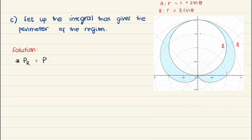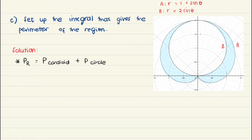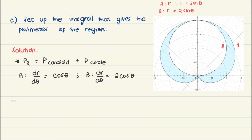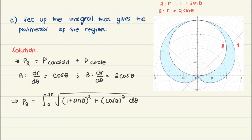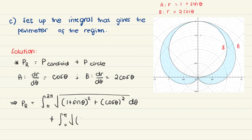For the perimeter, based on how the region is set up, we notice that the boundary consists of the perimeter of the cardioid and the perimeter of the circle, so we add them. Computing the derivatives: dr over d theta of the cardioid is cosine theta, and dr over d theta of the circle is 2 cosine theta. The perimeter is the integral from 0 to 2 pi of the square root of 1 plus sine theta quantity squared plus cosine theta quantity squared d theta, plus the integral from 0 to pi of 2 sine theta quantity squared plus 2 cosine theta quantity squared d theta. This gives the perimeter of region R.